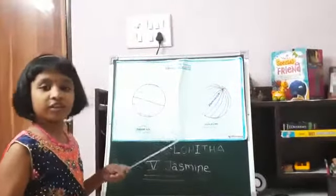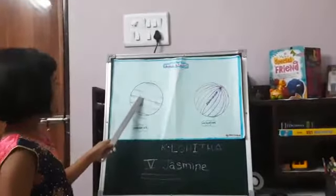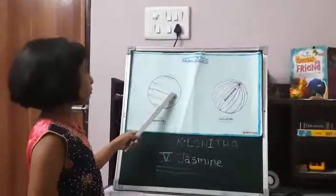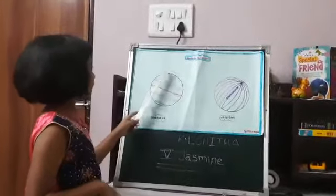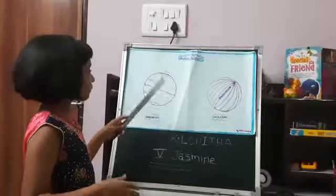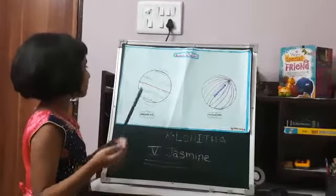These are the Tropic of Cancer, 23.5 degrees north; Tropic of Capricorn, 23.5 degrees south; Arctic Circle, 66.5 degrees north; and Antarctic Circle, 66.5 degrees south. The Arctic and Antarctic Circles are also called polar circles.